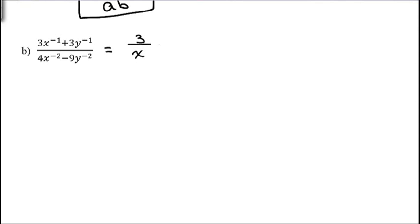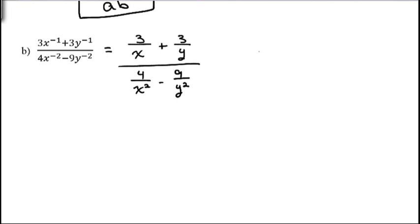Plus, same thing happens here, so that would be 3 over y. And same with the next term — the 4 stays on top and the x squared goes on the bottom, minus 9 stays on top and the y squared goes on the bottom. The LCD: we have an x but down here we have an x squared, so we need x squared. And we have a y but down here we have a y squared, so we'll take y squared. So we're going to multiply everything by x squared y squared.